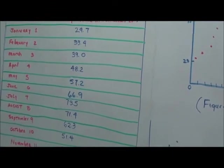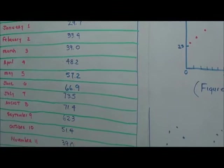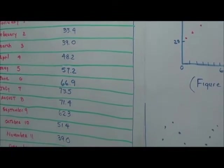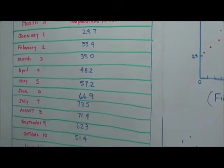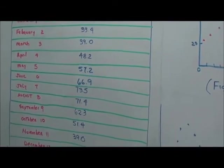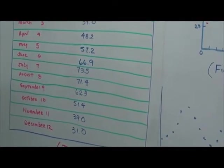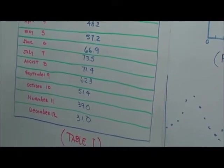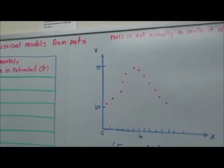And, of course, our temperature in Fahrenheit is 29 degrees, 29.7 degrees, 33.4 degrees, 39.0 degrees, 48.2 degrees, 57.2, 66.9, 73.5, 71.4, 62.3, 51.4, and 39.0, and 31.0.